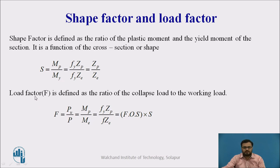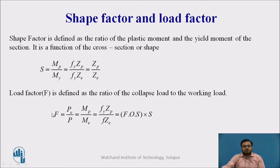The next definition is load factor. It is defined as the ratio of collapse load to working load: Pu / P = (Fy × Zp) / (F × Ze), where F is the stress less than the yield stress. This gives Fy/F — which is the factor of safety — multiplied by Zp/Ze — which is the shape factor. So the load factor equals factor of safety multiplied by shape factor.